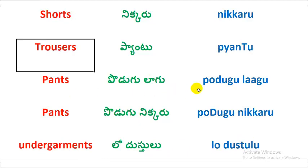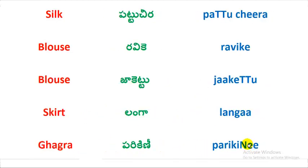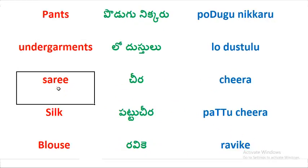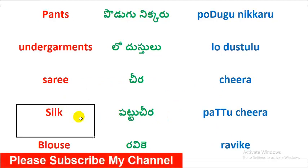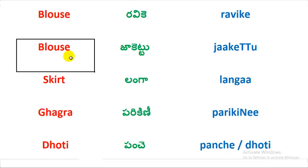Pants — Pantu. Pants — Puduku Lagi Pants. Puduku Nikkaru. Undergarments — low-dust-dudu. Sari — cheera. Silk sari — pattu cheera. Blouse — ravike. Another meaning: blouse jacket.